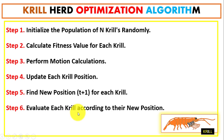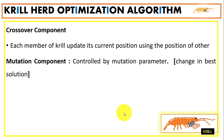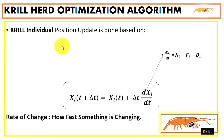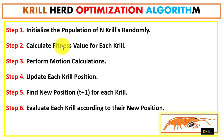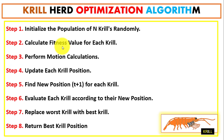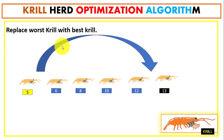To compute the new position for each krill, we perform two main operations: crossover and mutation. Using the crossover operator, we update a krill's current position using the position of other krills. With the mutation operator, we can change the best solution, controlled by the mutation parameter. We will see a numerical example in the next video showing how to compute all these values step by step.